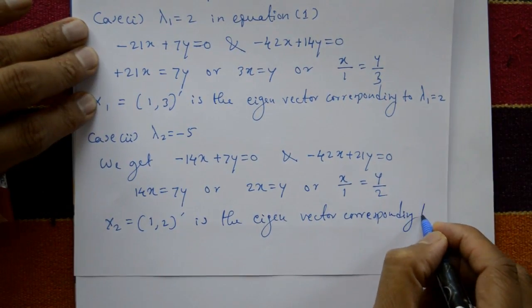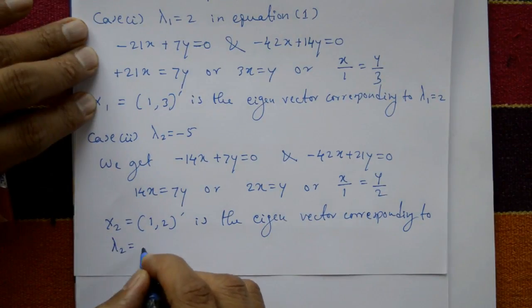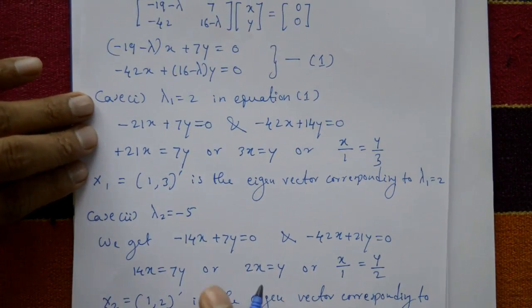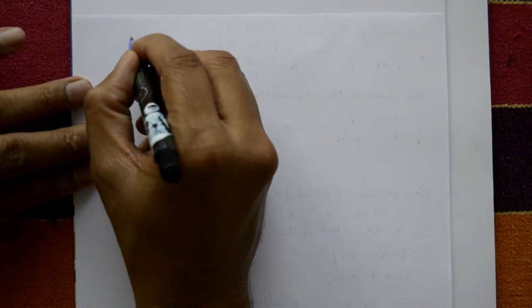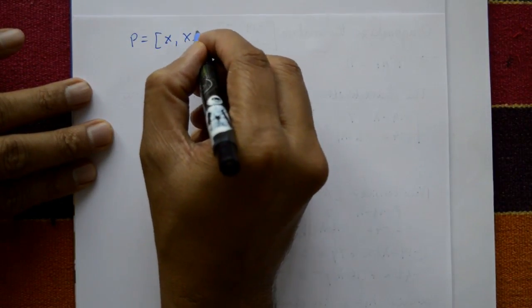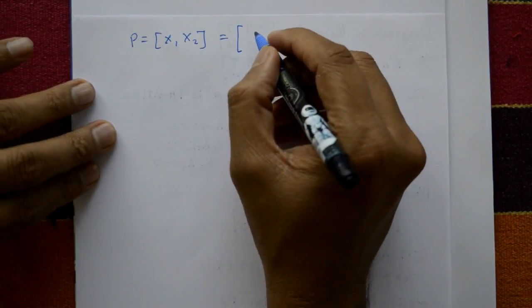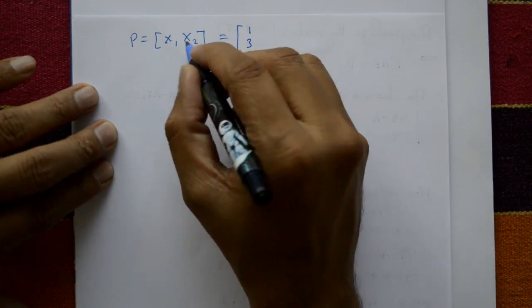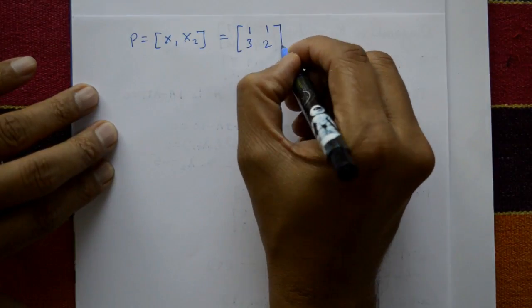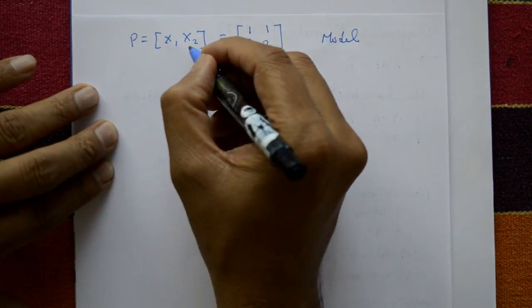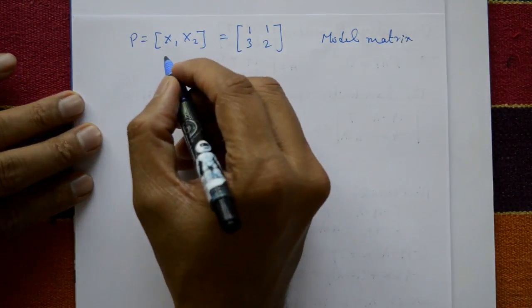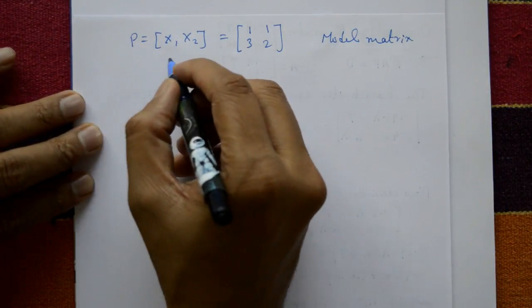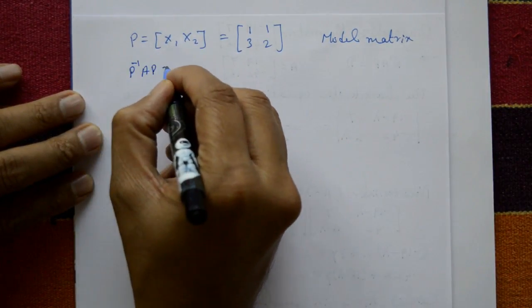Taking x1 and x2, the modal matrix P equals [x1 | x2], that is P equals [1, 1; 3, 2]. This is the modal matrix. The required diagonal matrix is given by inverse of P times A times P equals D.